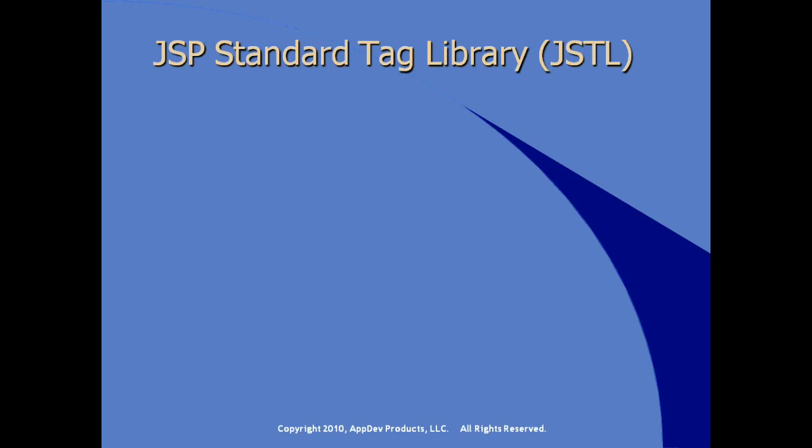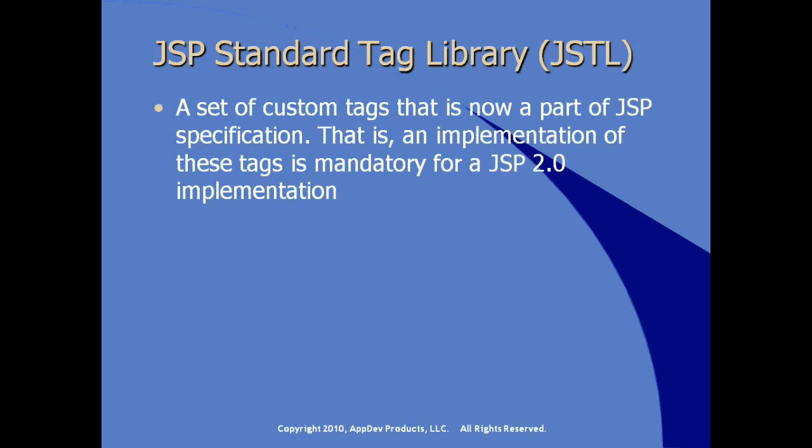Let's take a look at the JSP Standard Tag Library, or what's often referred to as JSTL. It's a set of custom tags that are now part of the JSP specification, so as developers we can rely on these tags being available in any modern JSP implementation. Implementation of these tags is mandatory to be qualified as a JSP 2.0 implementation. The use of JSTL can significantly simplify JSP development, making it easier to read, easier to maintain, and extending the skill set of our JSP developers.